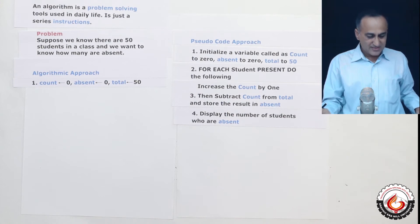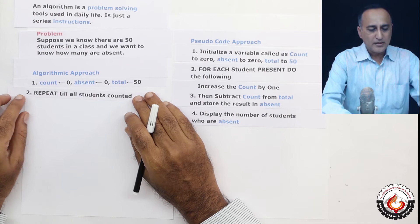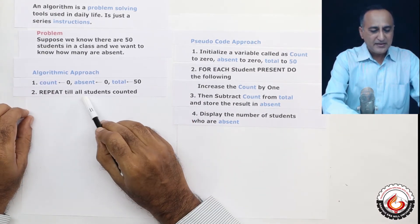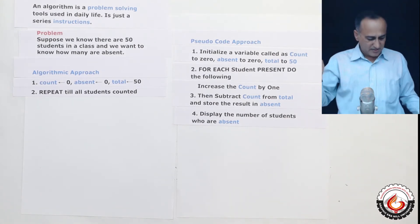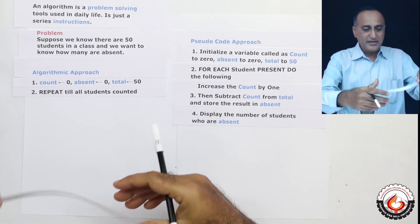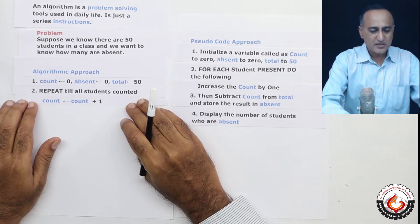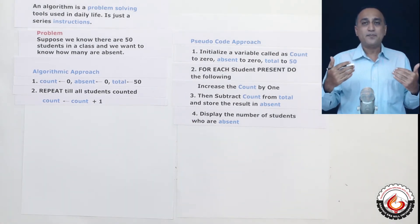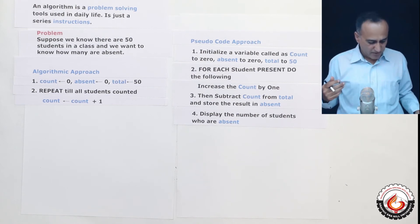Then what I'm going to say is in step number two, I'm simply going to say in an English like manner, repeat till all the students are counted. That means I'm going to say one, two, three, four like this. So as I'm counting each student, I am going to increase the count by one. So this process of counting the students is going to continue till I have counted all the number of students were present. At some point, the counting will be over.